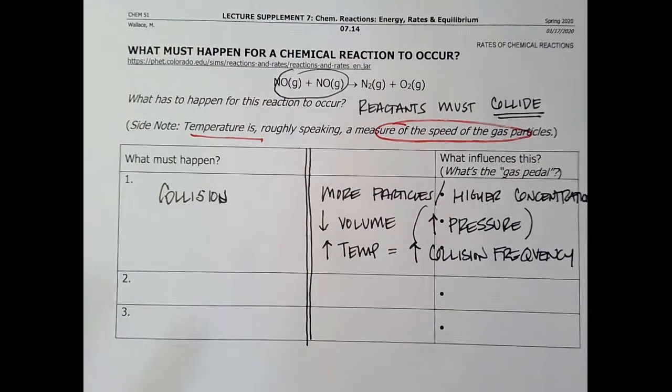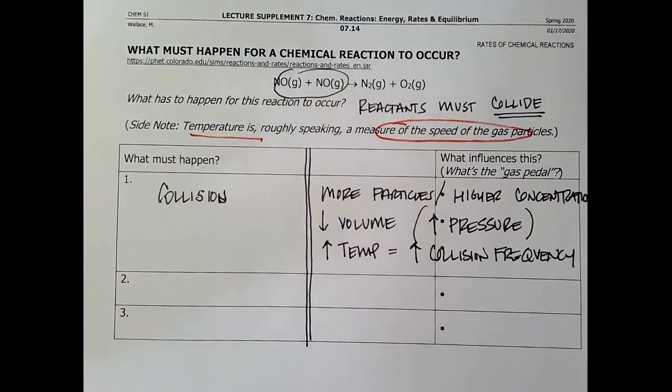So just to get them to collide, I could say, I could put more particles in there. I could decrease the volume. I could make it a smaller space. Or I could increase the temperature.